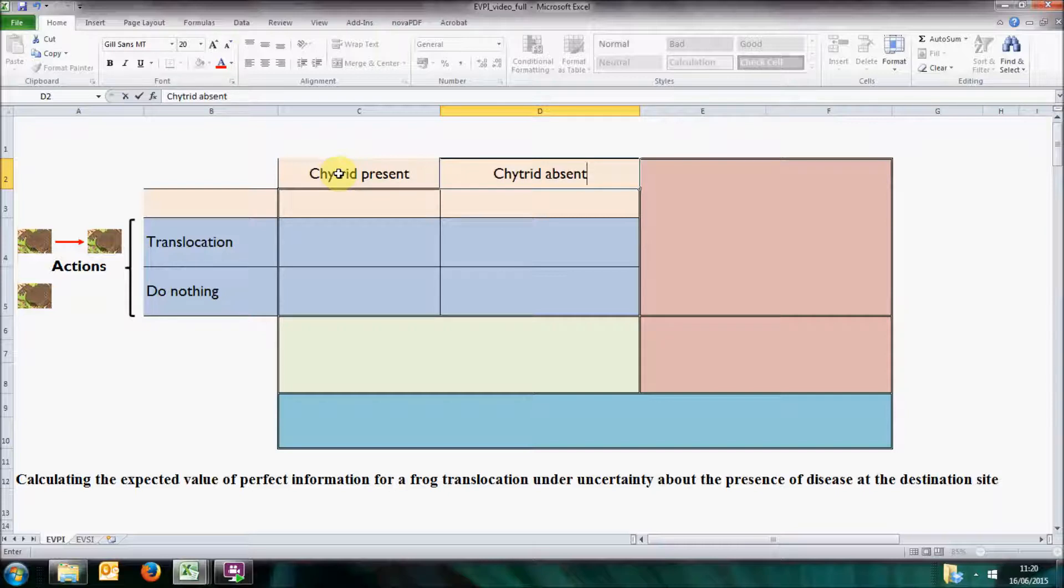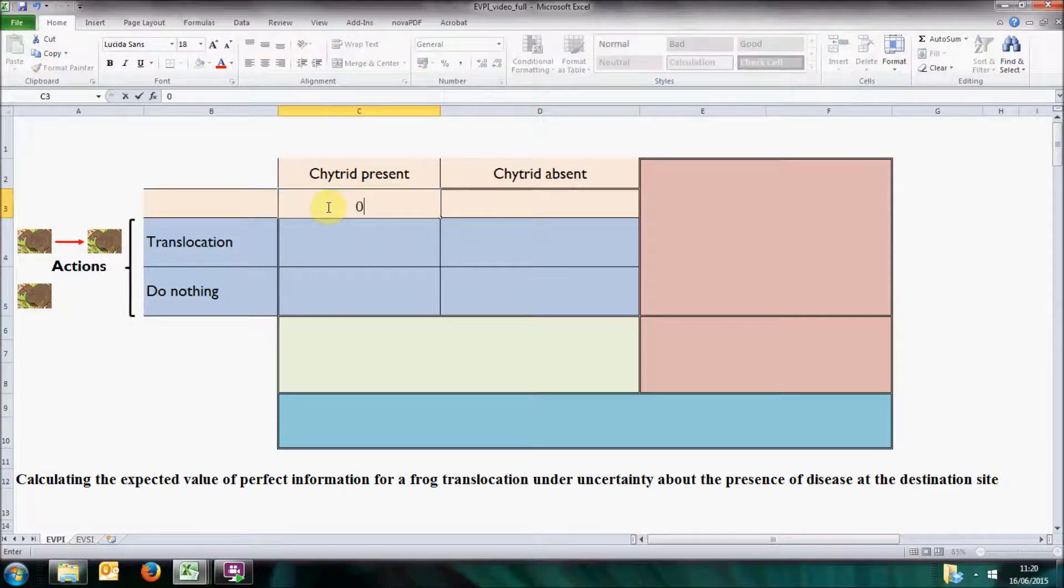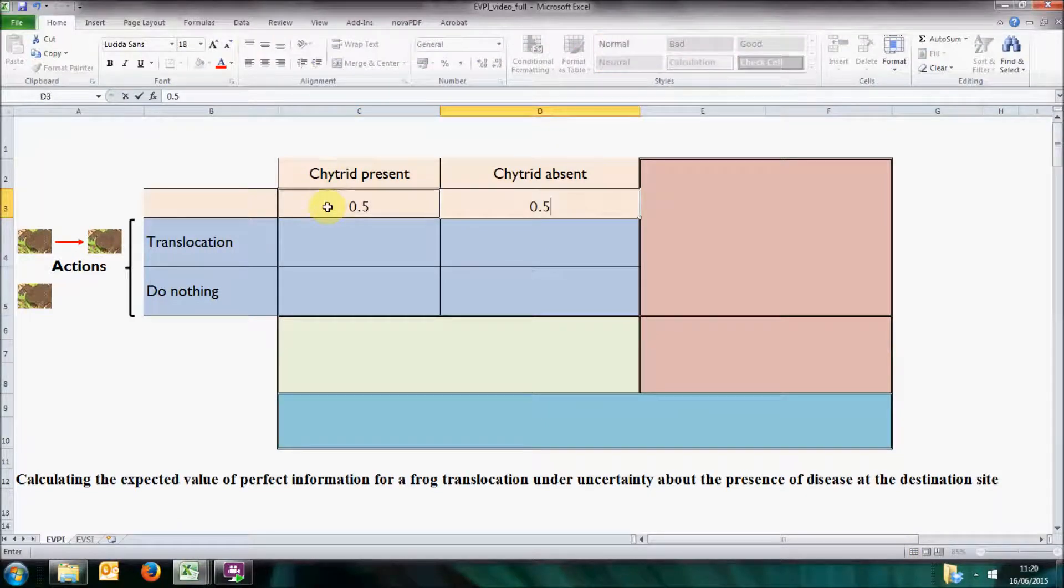We then need to define our belief that either hypothesis is true. In this case, based for example on published information from the study area, we think both hypotheses are equally likely. So there is a 50% chance of chytrid being present at the new site and a 50% chance of its absence, and this is what we call a prior belief.